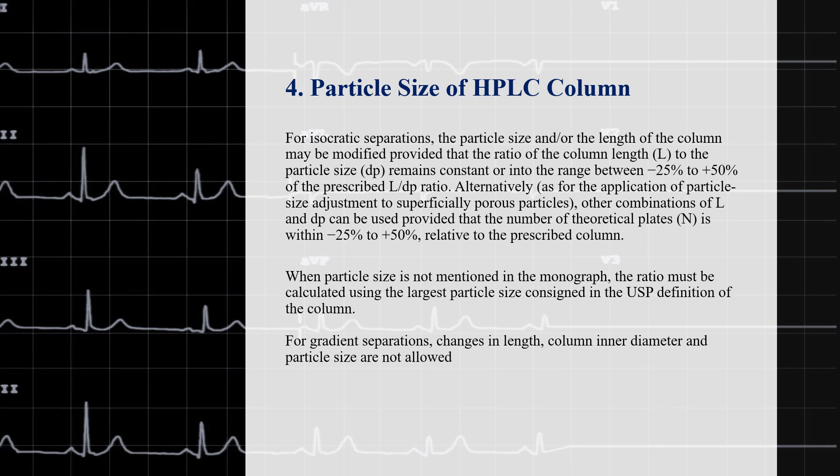Another factor that could affect the chromatographic behavior is the particle size of the HPLC column. For isocratic separations, the particle size or length of the column may be modified provided that the ratio of the column length to the particle size remains constant.